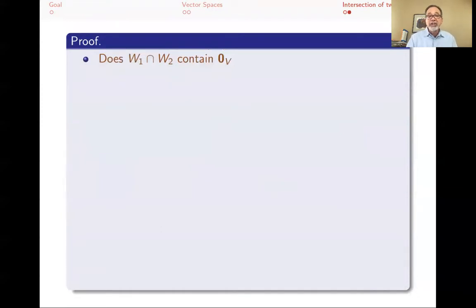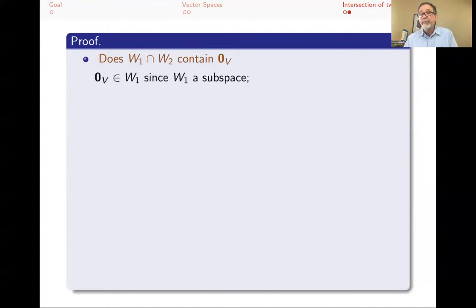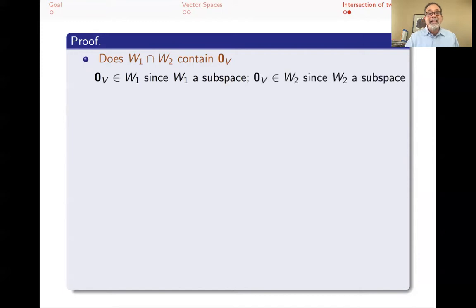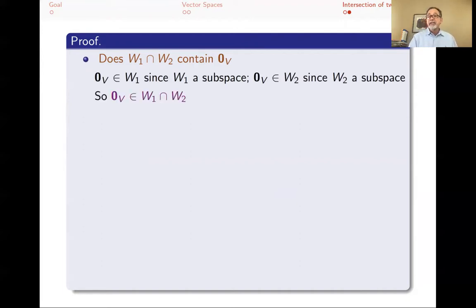Now let's do the proof. Does W1 ∩ W2 contain the zero vector of V? Well, the zero vector is going to be in W1, because W1 is a subspace and every subspace contains the zero vector of V. And the zero vector of V is also in W2, because W2 is a subspace. If it's in W1 and in W2, then it must be in the intersection — that's what intersection means. So we've proved that W1 ∩ W2 has the zero vector of V, and that condition is satisfied.